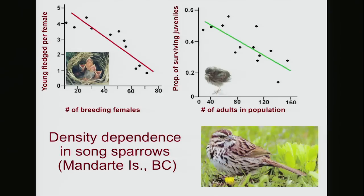And it gets worse for the poor fledglings. Once they leave their nest, their chances of actually surviving to become adults also declines as the adult population increases. At low population density, a fledgling has about a half chance of surviving to become an adult, but at high population density it's only about a quarter.